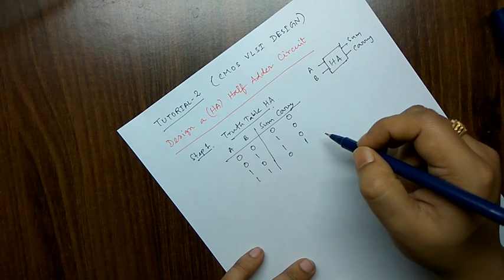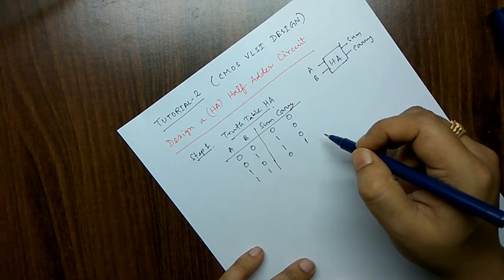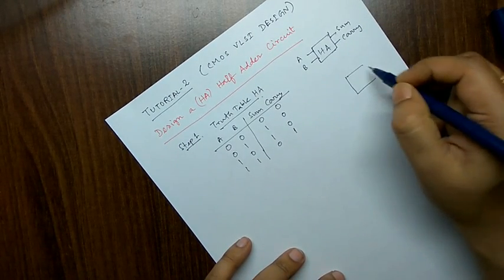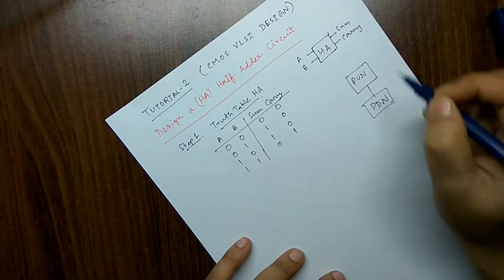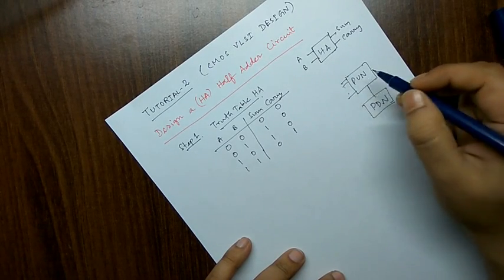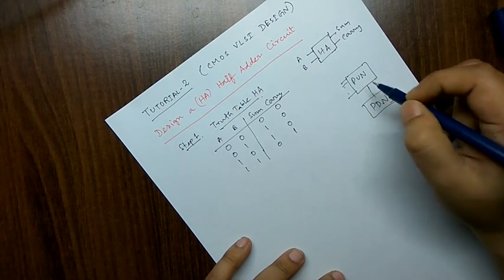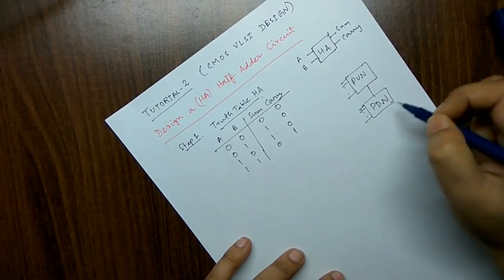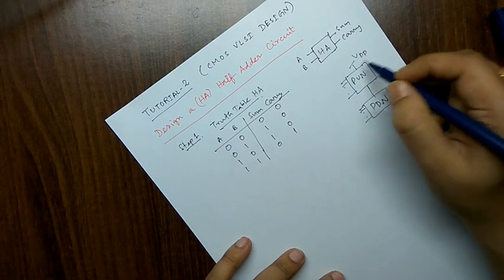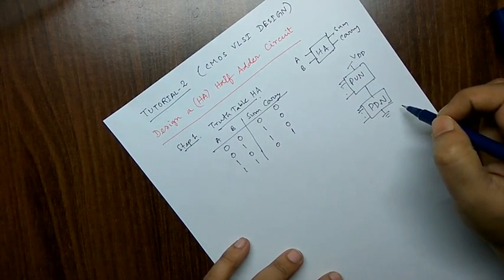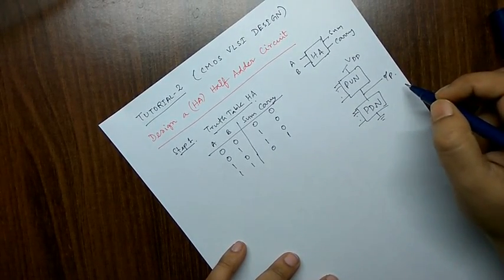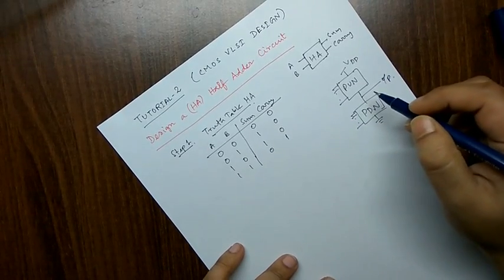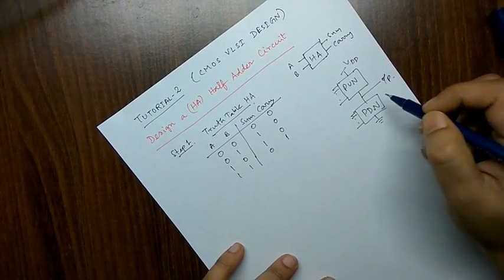What is new in VLSI design is we have to follow certain steps of VLSI technology by means of which we design a pull-up network and a pull-down network. The pull-up network consists of PMOS transistors and the pull-down network consists of NMOS transistors. The pull-up network must be connected to VDD and the pull-down network must be connected to ground, with a single output. In CMOS, automatic inversion takes place.